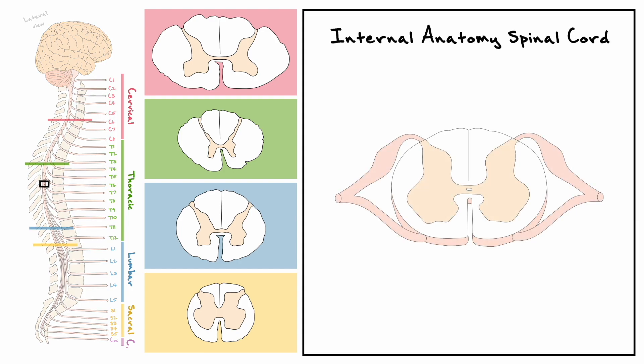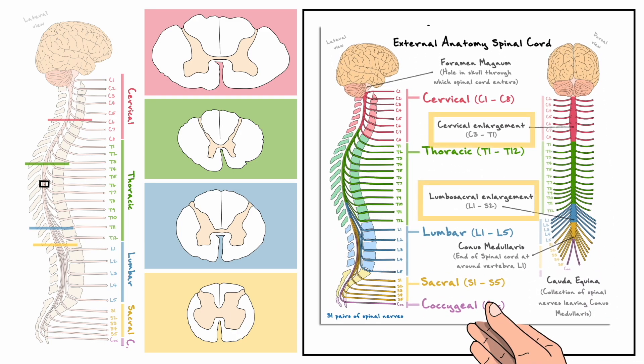One important difference to point out before we get into the general cross section is about the size of the cross sections. As you can see, relative to one another, the cervical and lumbar cross sections are much bigger than the other two. This is explained by the cervical and lumbosacral enlargements, which are the regions that supply the limbs — the regions requiring the most sensory motor processing — thus making them anatomically bigger.